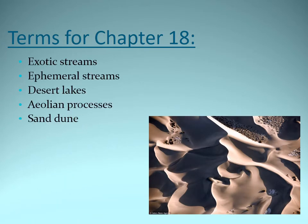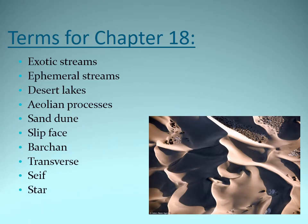Common terms that we will see in this chapter will include types of streams that we see in the desert, aeolian processes — aeolian means wind process — types of sand dunes like barkan, transverse, seif, and star, and then a definition for a sinkhole. On the right, you actually see a star dune, which is commonly found in movies that are portrayed in the desert.